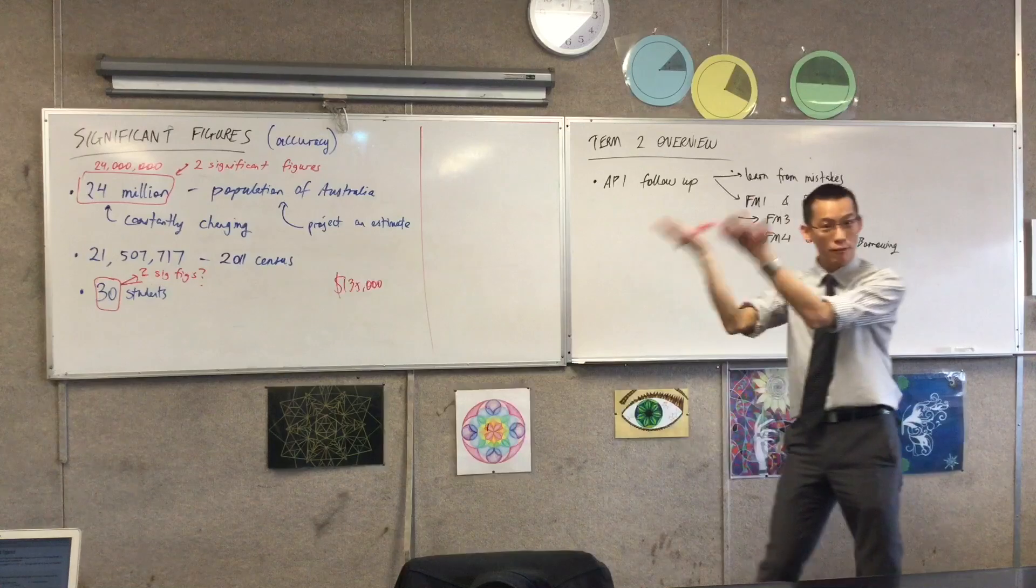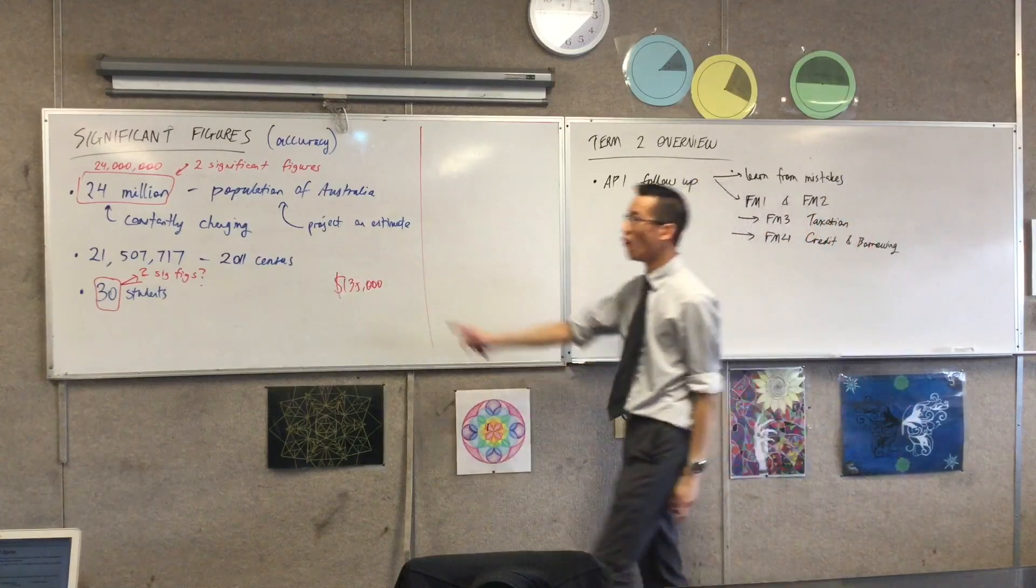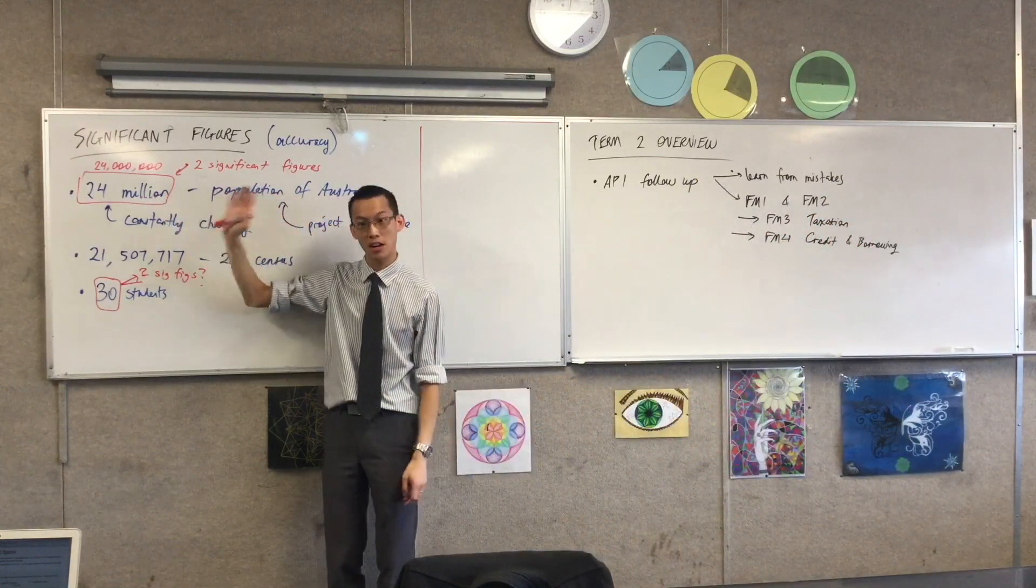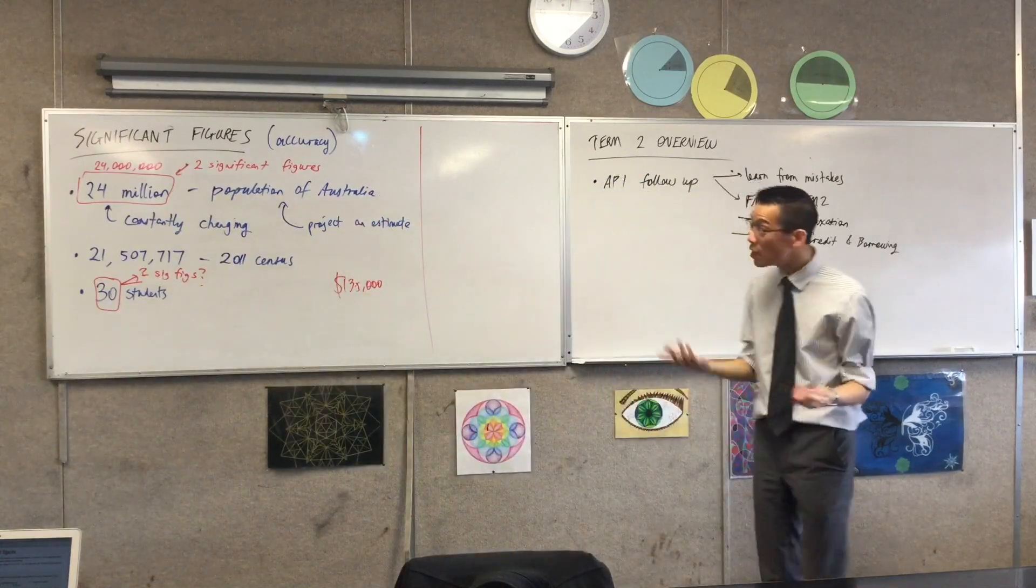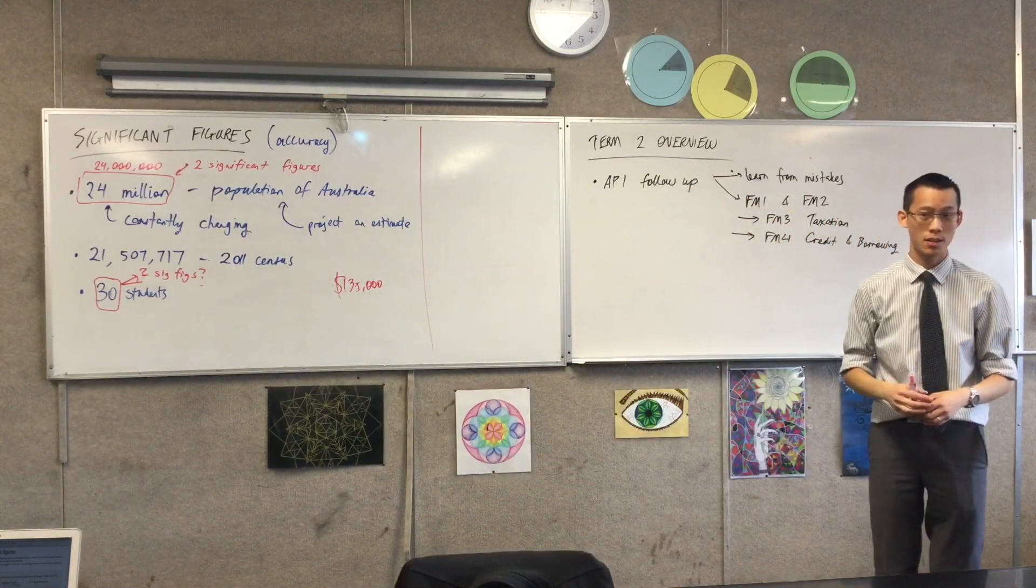I'm going to say, always, whenever it's been measured, has some kind of rounding approximation that's been brought into it. So you always get significant figures, okay?